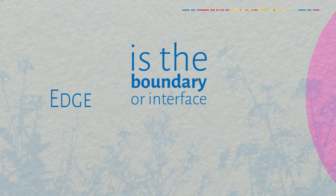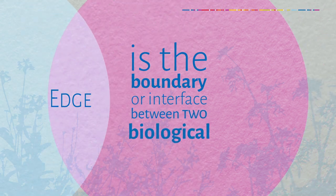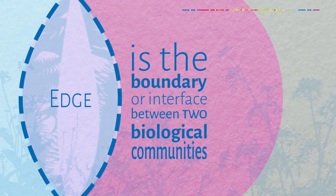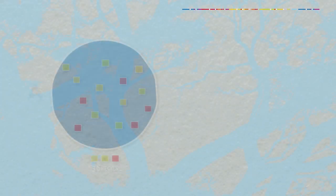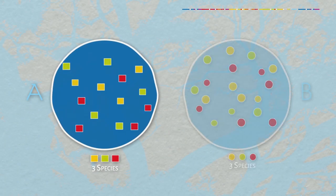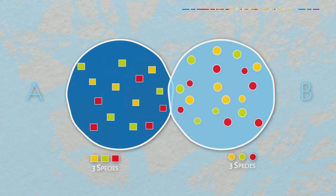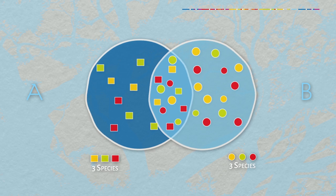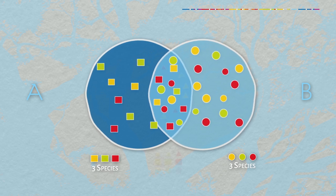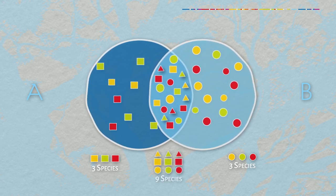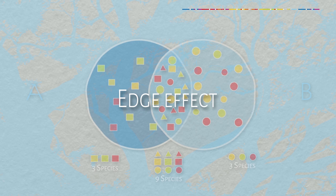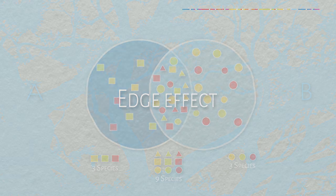Edge is the boundary or interface between two biological communities. These two ecosystems each contain three species, but in the region where they overlap they produce conditions which can now support three new species, increasing diversity. This is the edge effect.